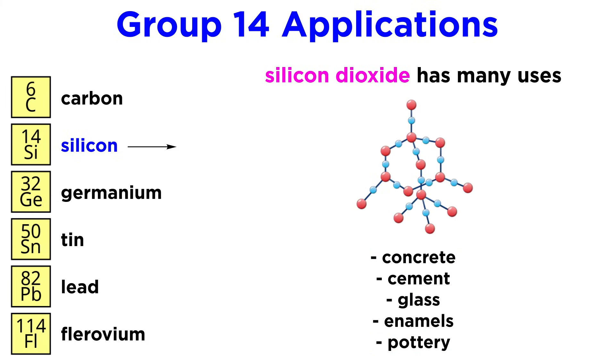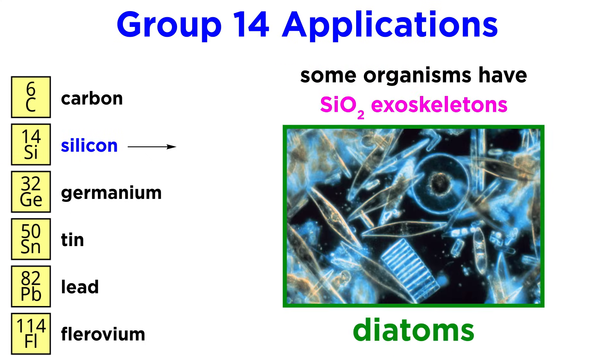Silicon dioxide is used for concrete, cement, glass, enamels, and pottery. Some organisms, like diatoms, even have silicon dioxide exoskeletons.